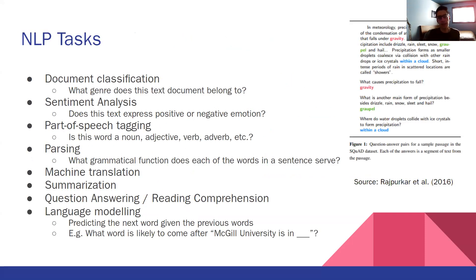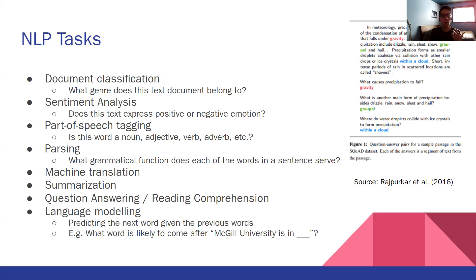There are several different NLP tasks tackled both in the research community and in applications. Document classification is a very common one and is actually the one we're going to be doing in the coding session. This essentially involves looking at what genre or category a text document belongs to. You could imagine having a bunch of text documents belonging to different categories like sports, politics, or finance, and you want your NLP system to be able to categorize all the documents correctly.